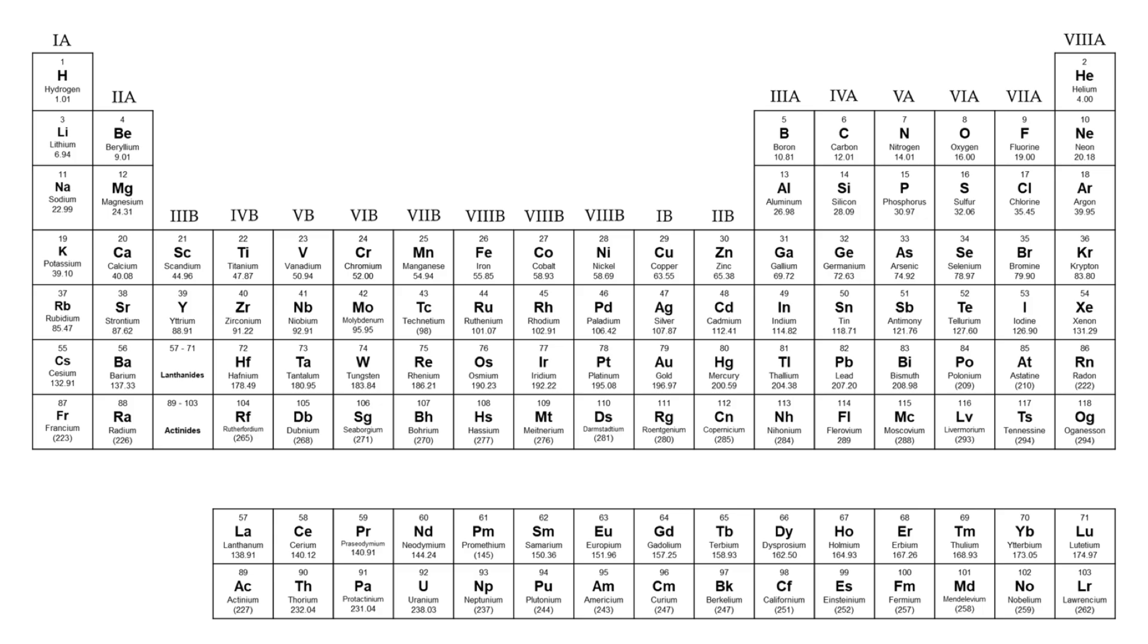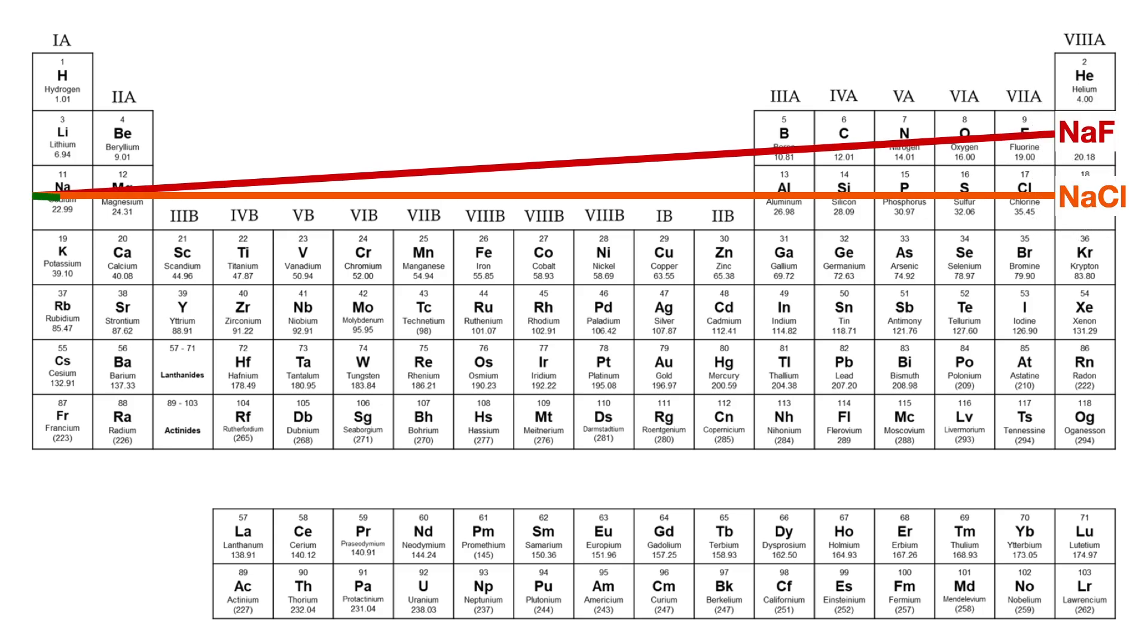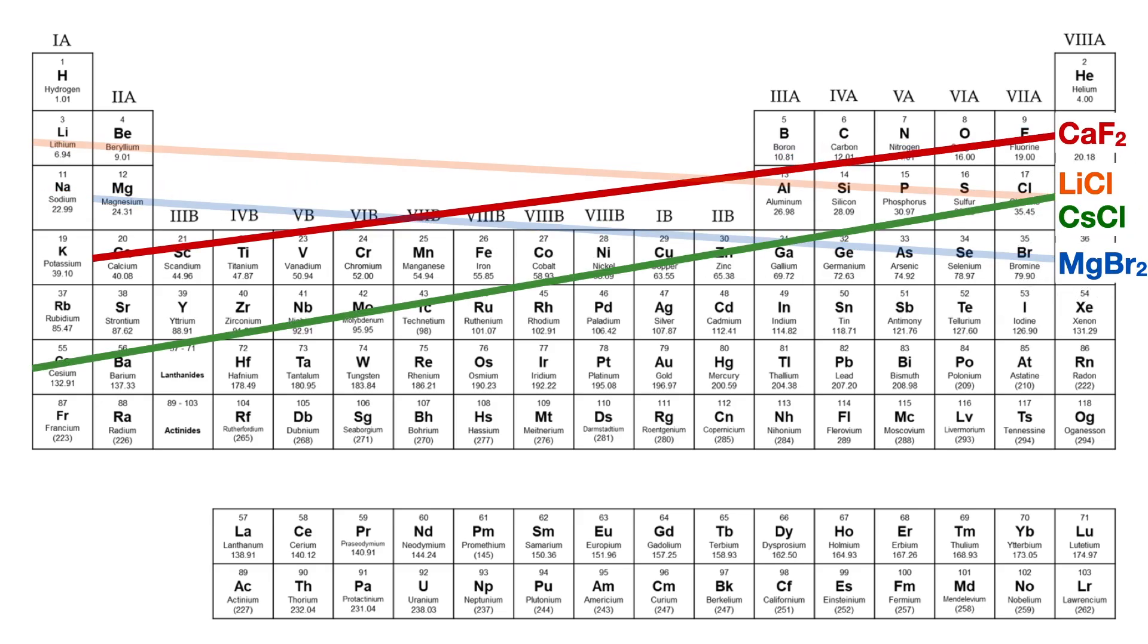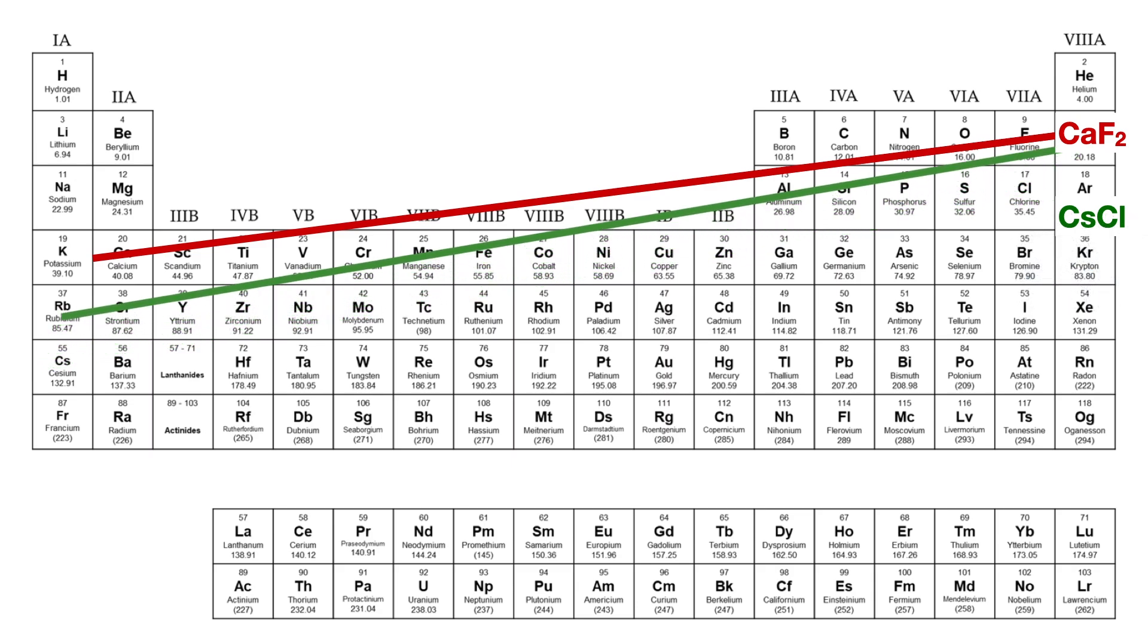You don't have to actually measure the lines or even draw them. Just visualize them between the atoms and the ionic compounds you're comparing on the periodic table and choose the most positive slope.